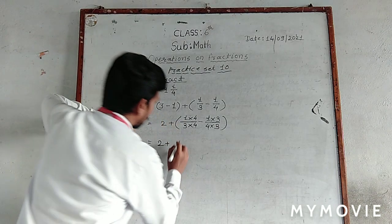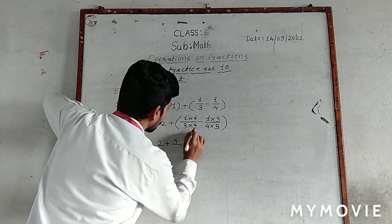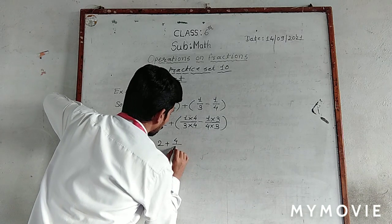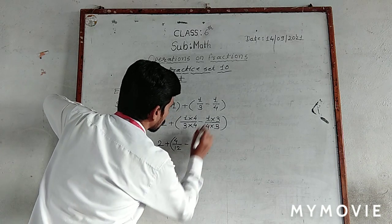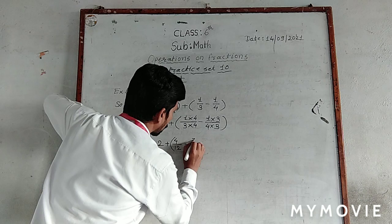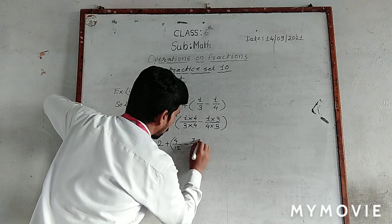Two plus. One multiplied by four equals four upon three multiplied by four equals twelve. Minus, one multiplied by three equals three, four multiplied by three equals twelve.